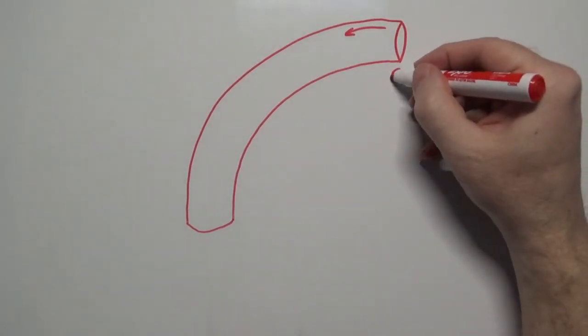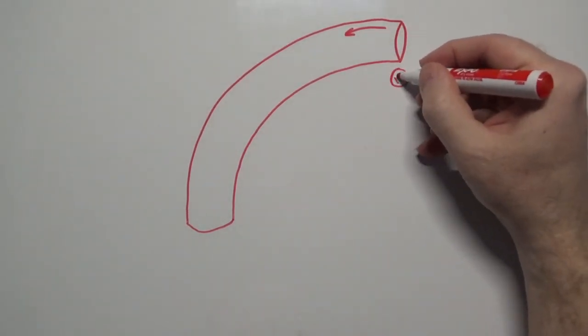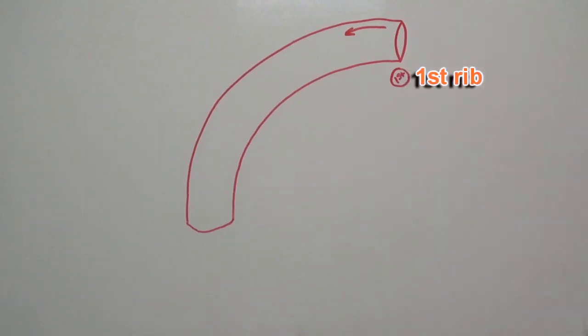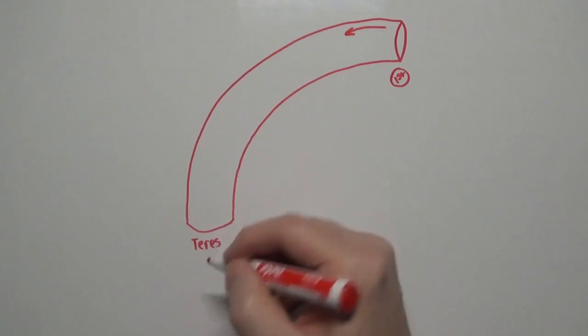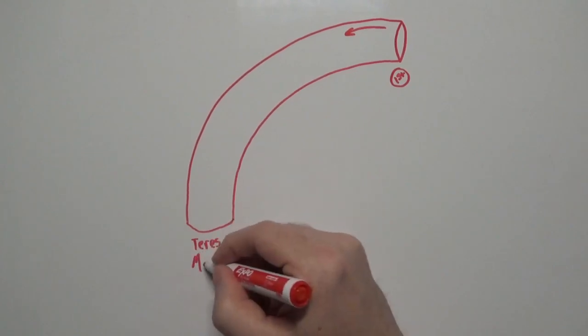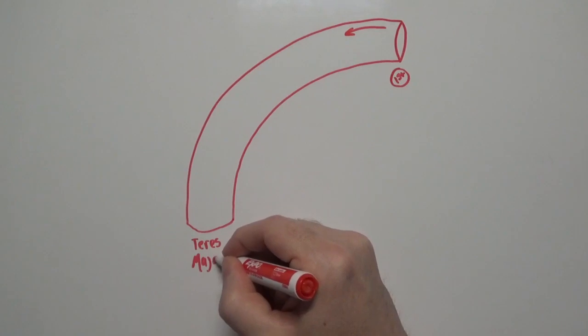The landmark for the medial boundary of the axillary artery is the first rib. So I'll label that first. For the lateral, or lower boundary, depending on your perspective,